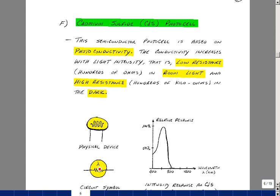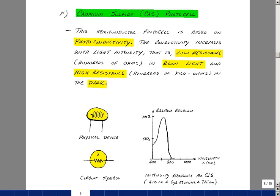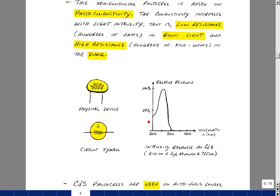What this does is that when the light intensity is high, we see a low resistance, and when we have darkness, we see a relatively high resistance. What's interesting about the cadmium sulfide photocell is that it really matches the human eye in its response to light.